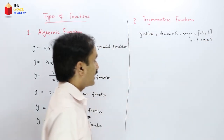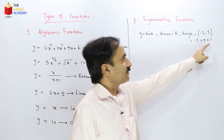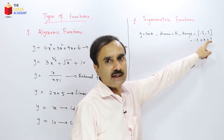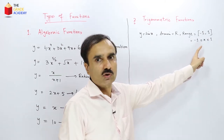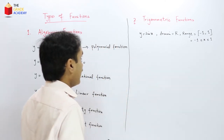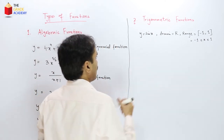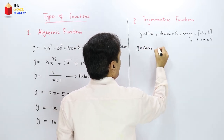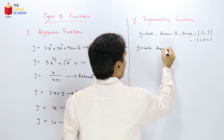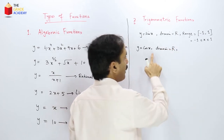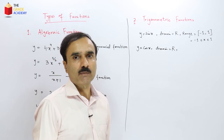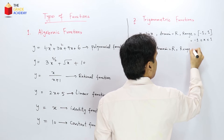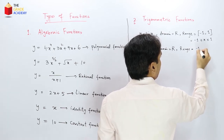For sin x, the domain is all real numbers, and the range is from minus 1 to 1, i.e., the minimum value is −1 and the maximum value is 1. The next trigonometric function is cos x. The domain of cos x is also all real numbers, and its range is also −1 to 1.